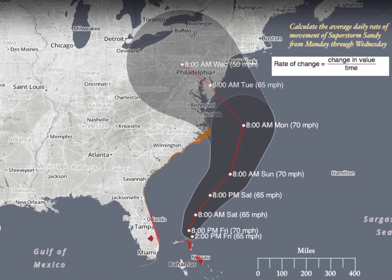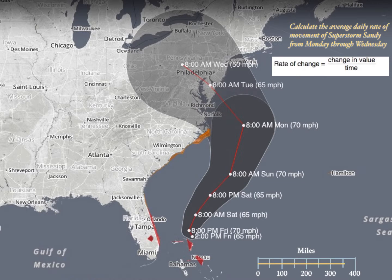On a piece of scrap paper, draw a line from the 8am Monday position to the 8am Wednesday position on the map. Mark where Monday is and where Wednesday is on your scrap paper. Then move that scrap paper to the map scale — that's the great thing about doing it on scrap paper, you can move it directly to the scale and read off how far Super Storm Sandy moved from Monday through Wednesday.